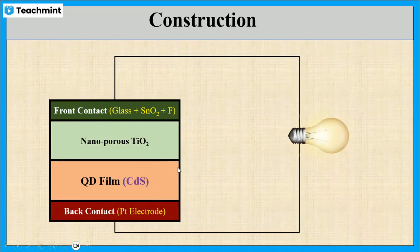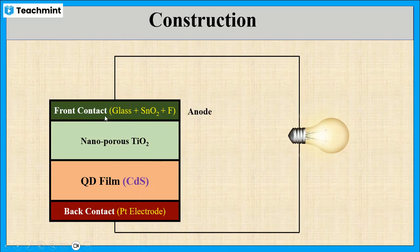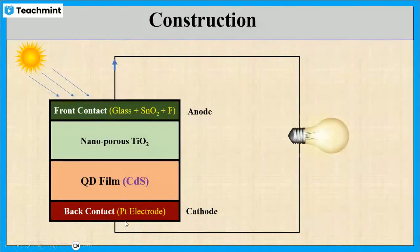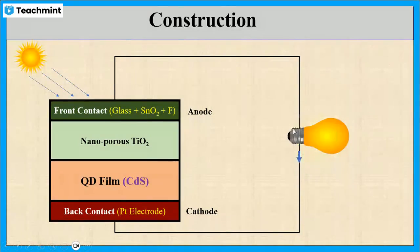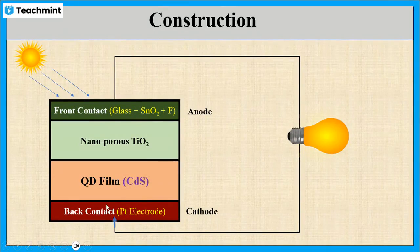This cell releases electrons through the front contact, hence the front contact acts as the anode. Electrons are received at the back contact, hence the back contact acts as the cathode. The electron movement takes place from front contact to back contact, that is from anode to cathode.